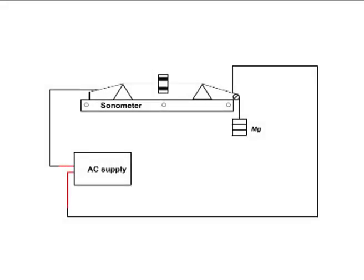Procedure. In this experiment, a small current produced by a signal generator causes a sonometer wire to move up and down due to interaction with the magnetic field of a U-shaped magnet.